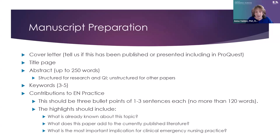You need a title page — there are instructions for everything needed on it. You need an ORCID number. We like to have your Twitter handle because we try to put your papers out on social media. You need an abstract — structured with headers for research and QI papers using the IMRAD model (Introduction, Methods, Results, and Discussion), and unstructured as a narrative for section papers. We need three to five keywords — really pay attention to your keywords because that's what helps people find your paper and cite it.